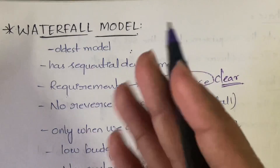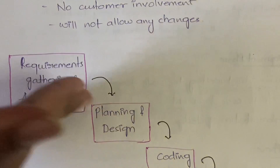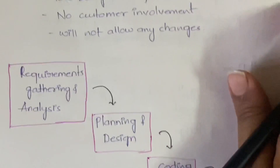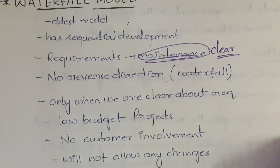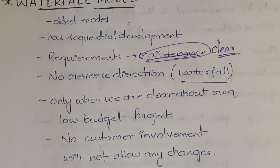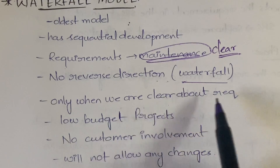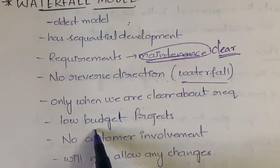Next is no reverse direction — you cannot go back. You go in one direction only, you cannot come back up. Just like a waterfall falls only from top to bottom, it does not go back. The same flow happens here — it only works when we are clear about the requirements.